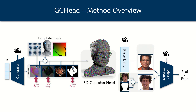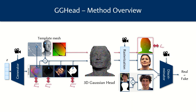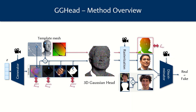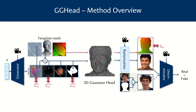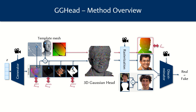Furthermore, we propose a novel UV total variation loss to improve the geometric fidelity of generated 3D heads. Intuitively, this regularization encourages that neighboring rendered pixels should stem from Gaussians that are close in UV space. Taken together, our pipeline learns 3D geometry and appearance priors for human heads from large 2D image collections, and both generates and renders 3D heads in real time.